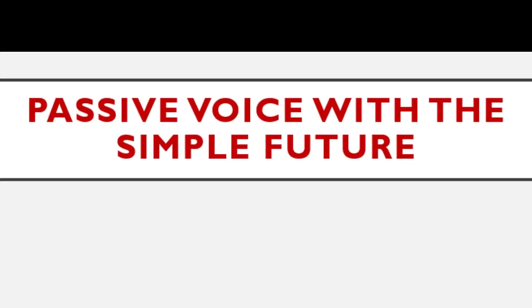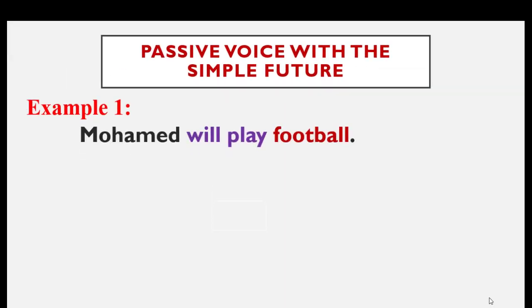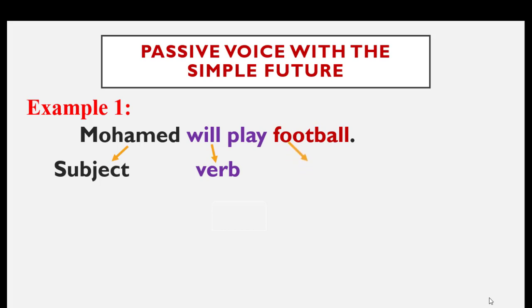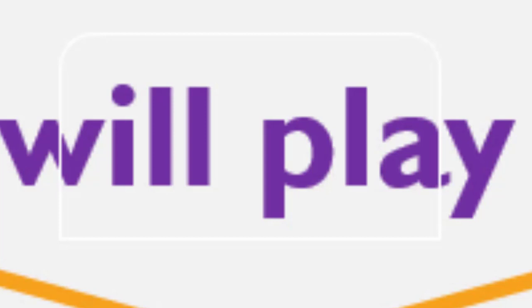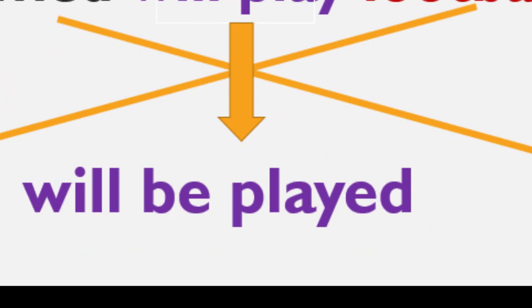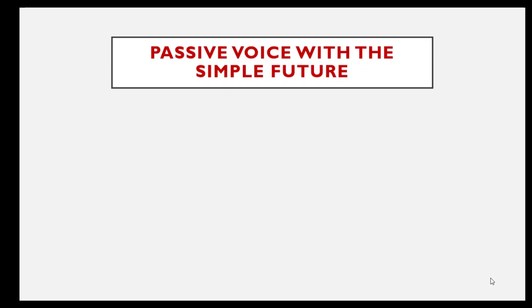Now let's go to passive voice with the simple future. Example: Mohammed will play football. Mohammed is the subject, will play is the verb, and football is the object. Football becomes the subject and Mohammed becomes the object. For will play, this is the simple future, so we use will be plus the past participle. If the verb is regular we add -ed; if it's irregular we use the third column form. Don't forget by as well.